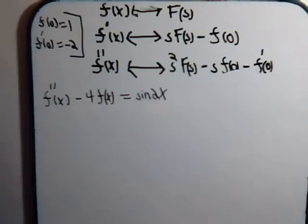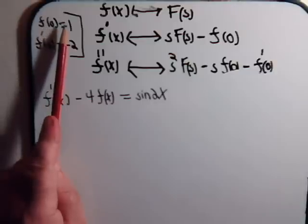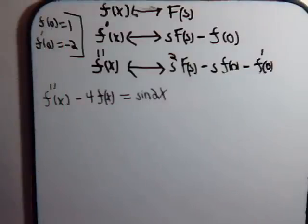And we also have these initial conditions. Whatever this function is, when you evaluate it at 0 it has to be equal to 1, and when you take its first derivative and evaluate that at 0 it has to be equal to minus 2. So, given this information, we want to solve this equation for f of x.